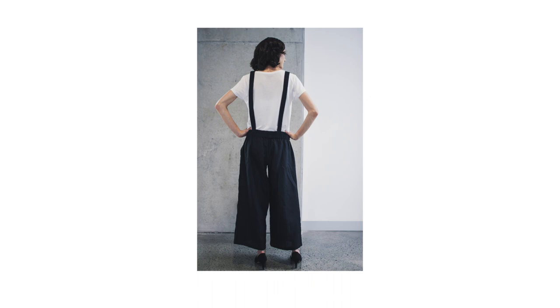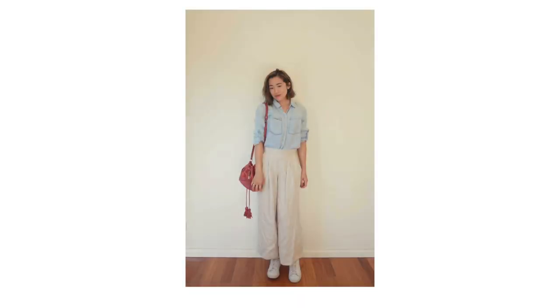The original Yoko pattern is cut quite low on the waist, so by increasing the crotch length we're going to raise the waistline. As you can see here in the lighter linen version that I've made, you can turn it into high-waisted pants.